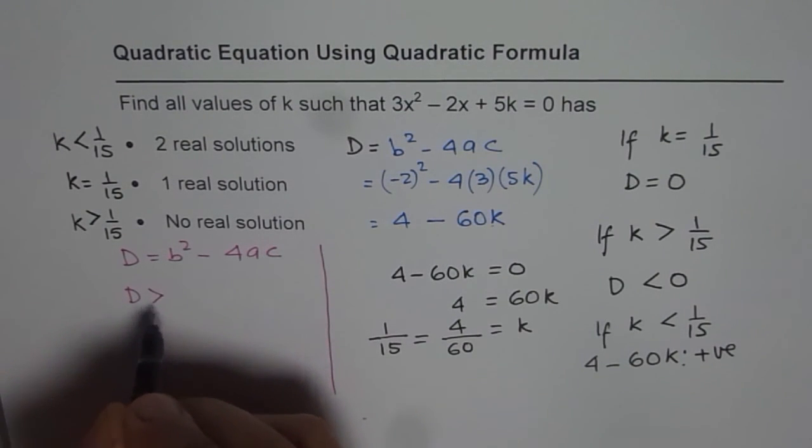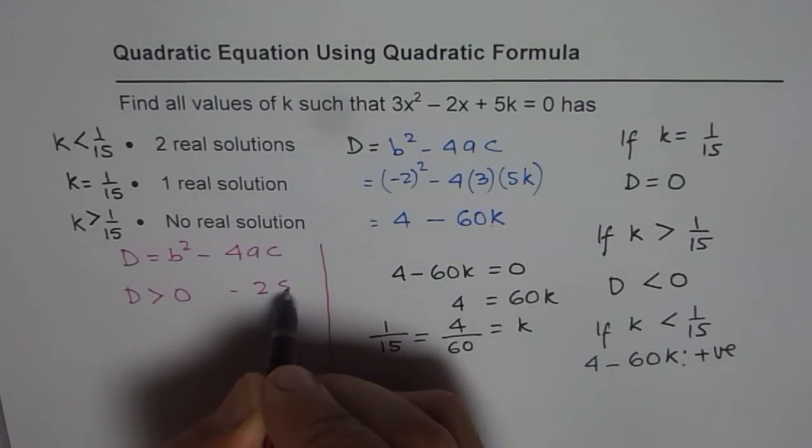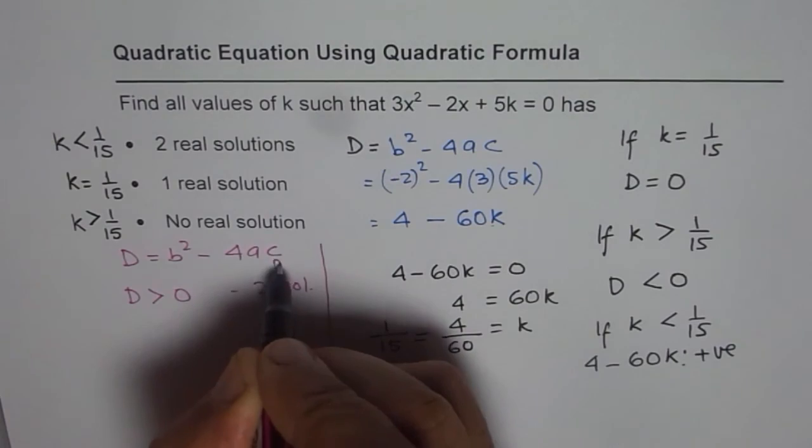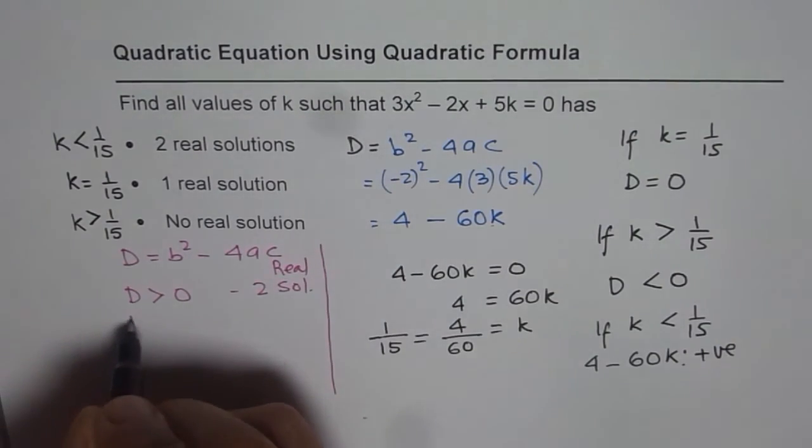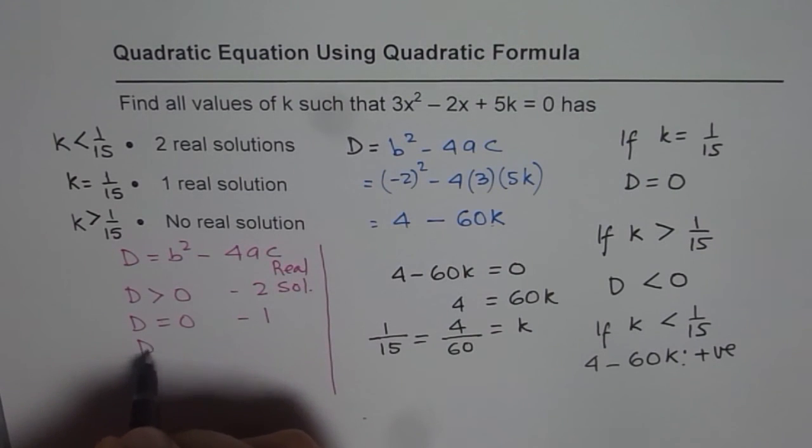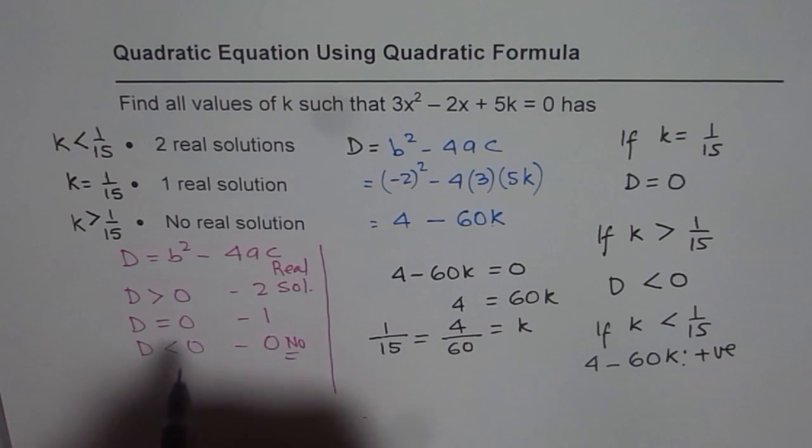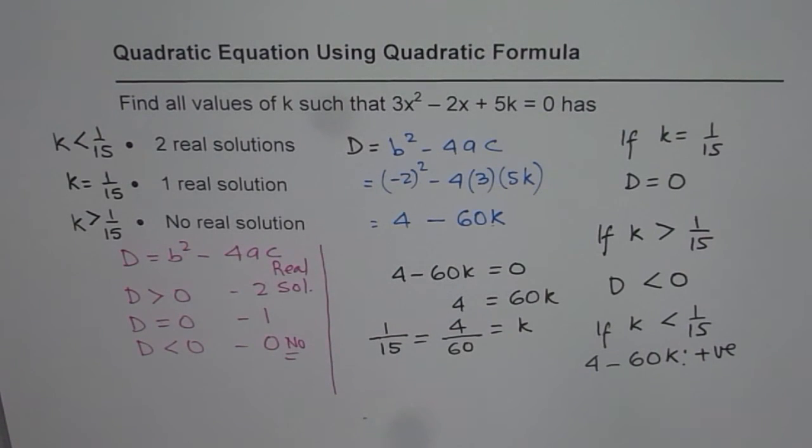If d > 0, then we have two real solutions. And if d = 0, then we have 1. And if d < 0, then we have 0 or none, no real solutions. So that is how we have to solve it.